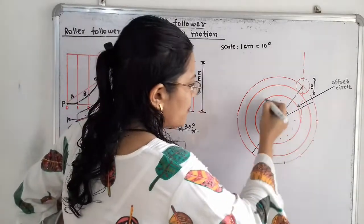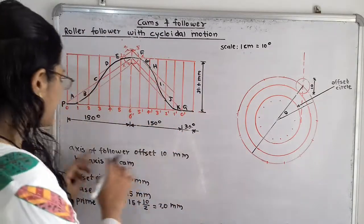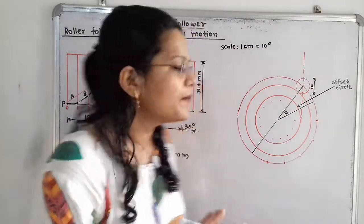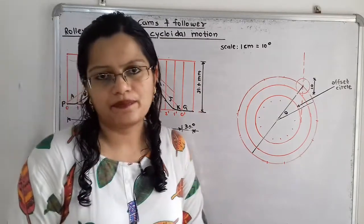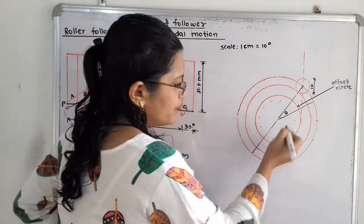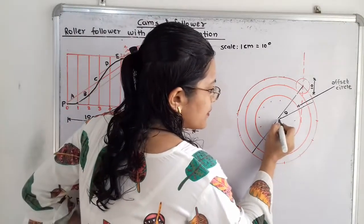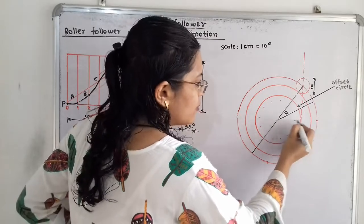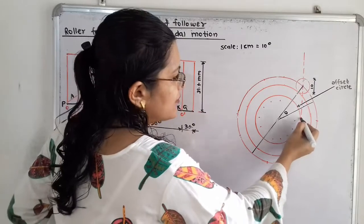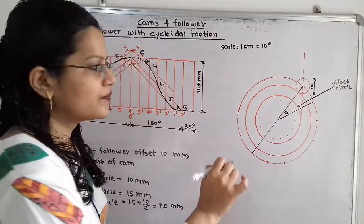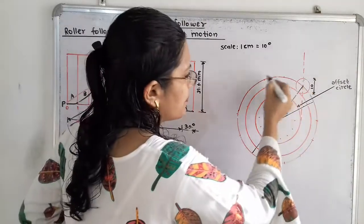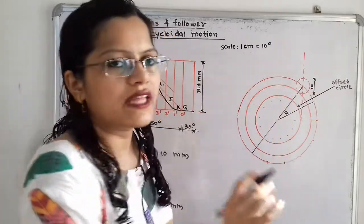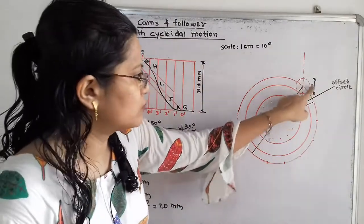The axis of the roller follower passes through the center of the roller, offset 10 mm from the cam axis through center O. We take a horizontal distance of 10 mm from O and draw a vertical dashed line. We find the intersection of this vertical line with the prime circle, and draw the roller circle there with diameter 10 mm (radius 5 mm). This is the initial position of the follower.